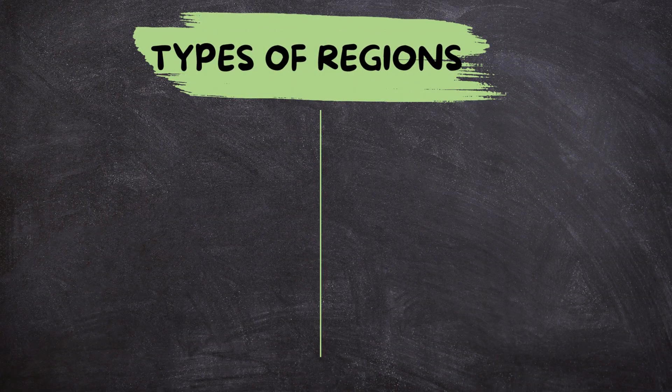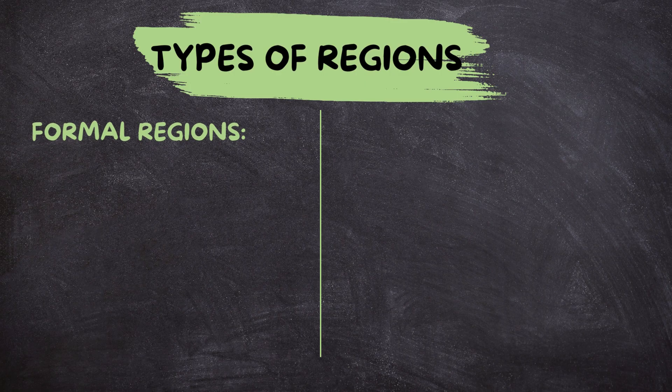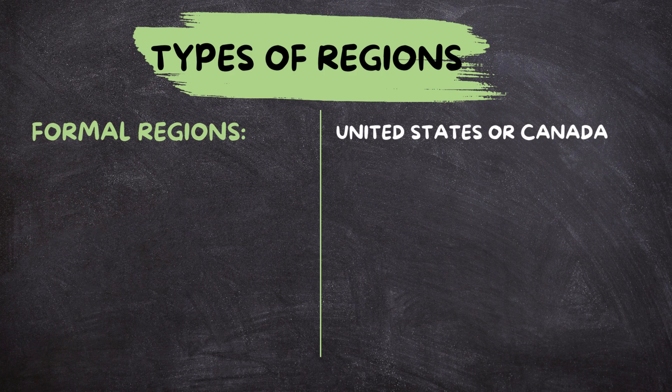Common types of regions in human geography. Formal regions: these are regions defined by a common trait such as language, political boundaries, or climate. For example, countries like the United States or Canada are formal regions because they have clearly defined borders and governments.